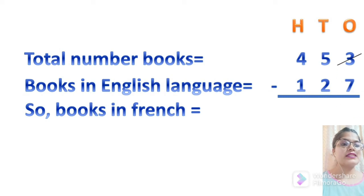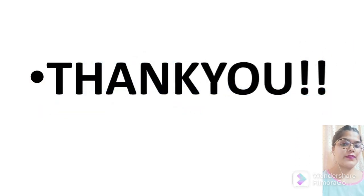So as you can see, 3 is smaller than 7. So we will put cross on 3 and write 13 here. And 13 minus 7 is 6. We will put cross on 5 as it is left with 4 only. So 4 minus 2 is 2. And at hundreds, we can see digits are simple which is 4 minus 1. So we will write 4 minus 1 equals 3.